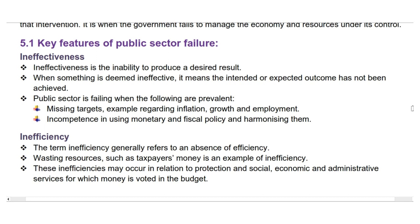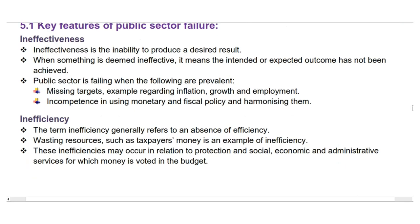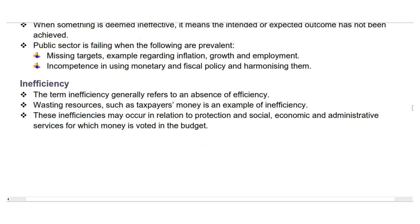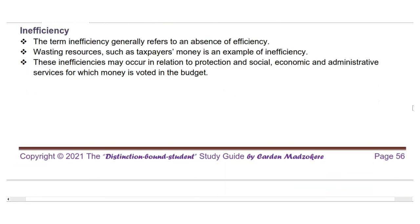Inefficiency. The term inefficiency generally refers to an absence of efficiency. Wasting resources, such as taxpayers' money, is an example of inefficiency. These inefficiencies may occur in relation to protection and social, economic, and administrative services for which money is voted in the budget.